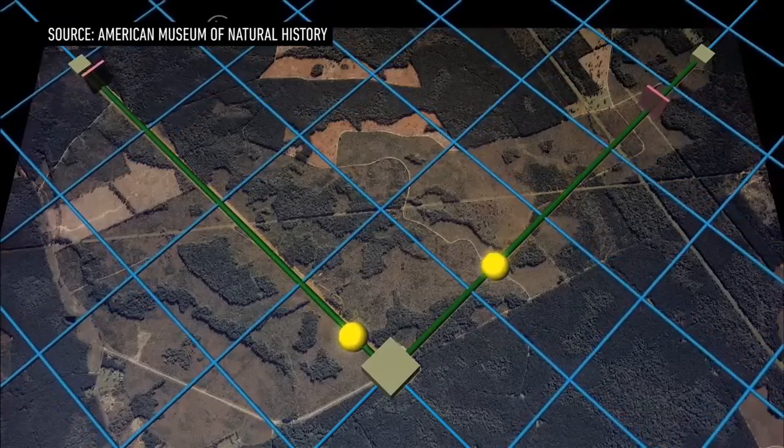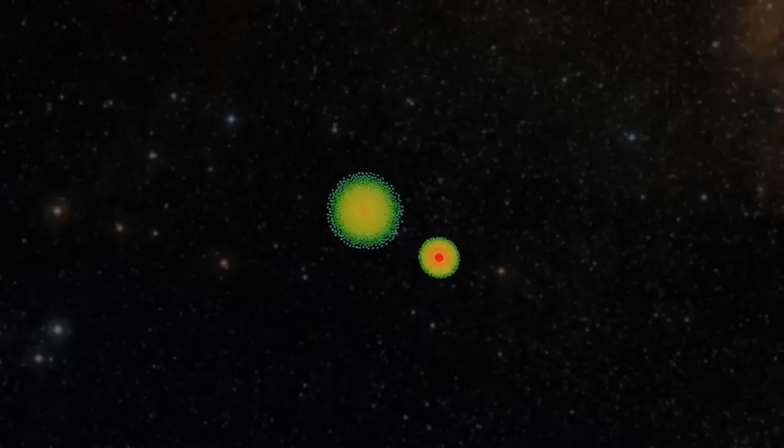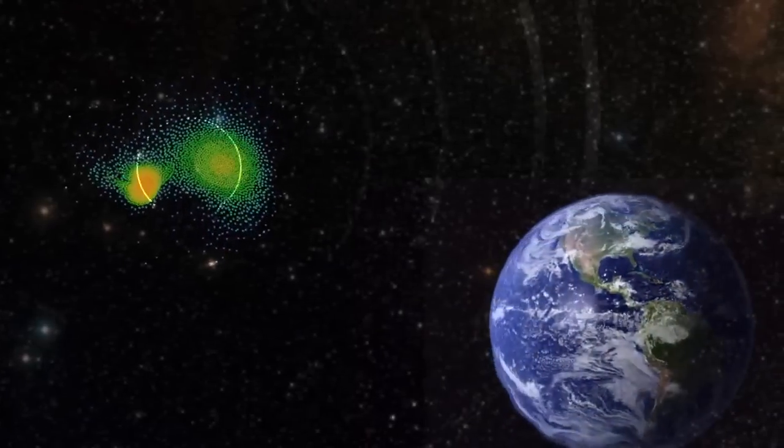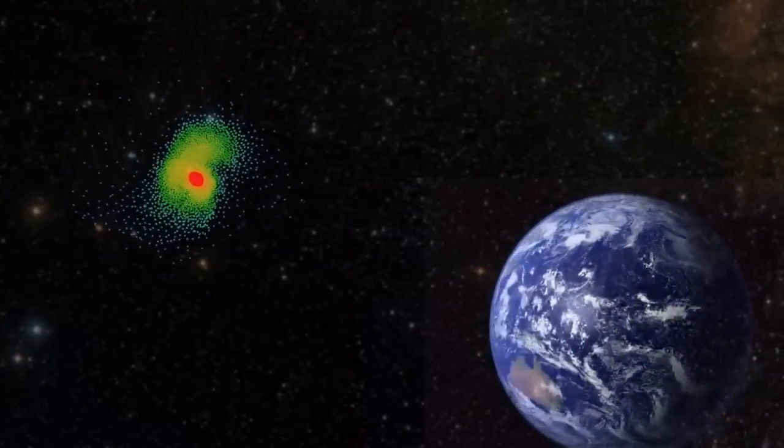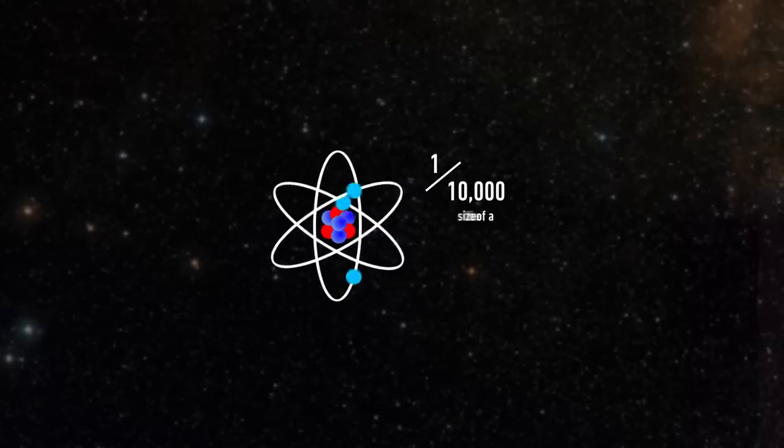The relative movement of these mirrors is incredibly slight. By the time the waves from the black holes make it to Earth, they only change LIGO's instruments by about one ten-thousandth the size of a proton.